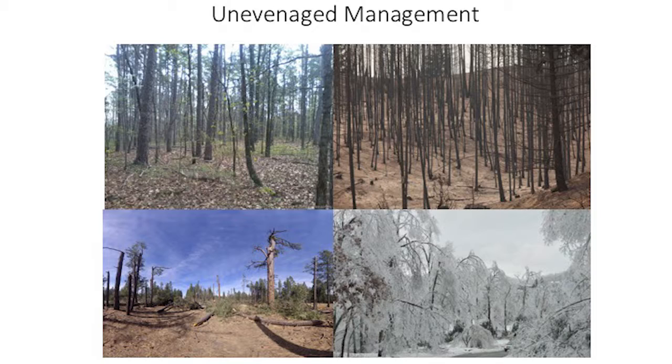Now let's talk about how this distribution in diameter classes can help you in terms of disturbance. The first one to consider is fire. In a fire - generally speaking, as long as it's not a crown fire - I'm talking about the typical low intensity surface fires we get in Mississippi in the fall, your small trees are at greatest risk of mortality. But because of our diameter distribution, we also have medium and large sized trees in our stand. Those are going to survive, and a lot of our economic vitality is maintained in those larger size classes, so uneven age management helps maintain value and lowers the risk of overall mortality.